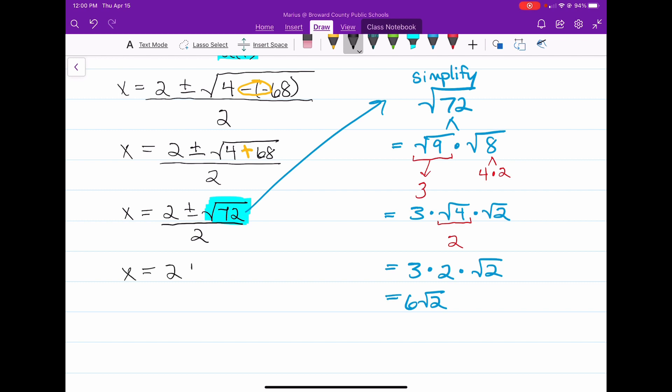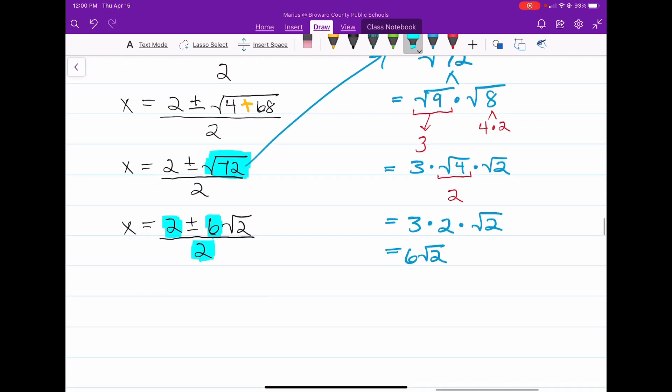So we're going to have 2 plus or minus 6 square root of 2, all of that divided by 2. Now that we've done that, we're only going to focus to finally get to our final answer. We have to still simplify. These numbers that I'm highlighting right here all can be divided by 2. So technically speaking, I can divide this by 2, I can divide that by 2, and I can divide the 2 in the denominator by 2. So when we do that, this becomes 1 plus or minus 3 square root of 2, all of that divided by 1. But we already know that anything divided by 1 is just itself. So our final answer would be 1 plus or minus the square root of 2. That's our final answer.